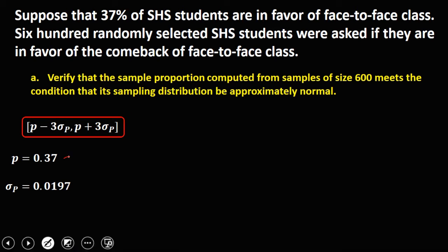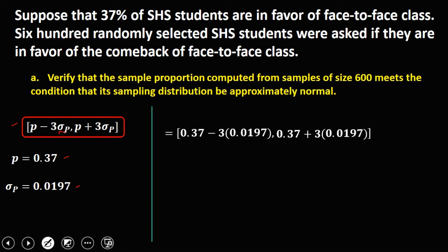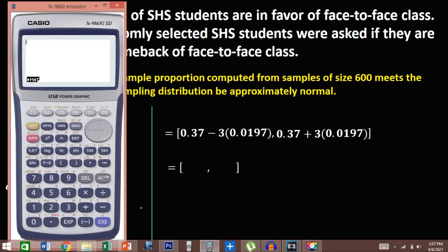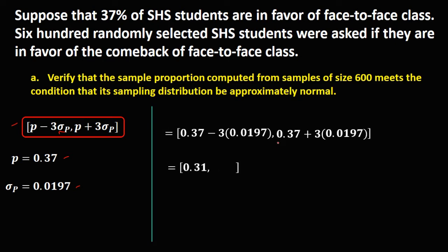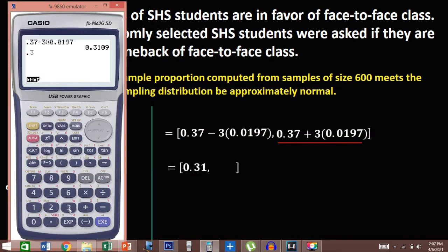Using the normality check formula with P = 0.37 and standard deviation = 0.0197: the lower bound is 0.37 minus 3 times 0.0197, which equals 0.31; the upper bound is 0.37 plus 3 times 0.0197, which equals 0.43.